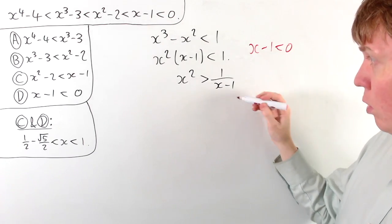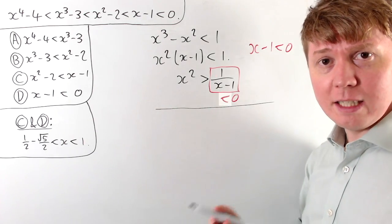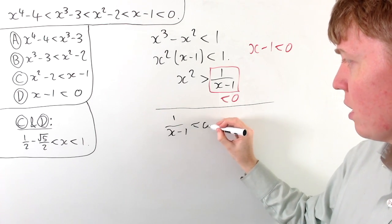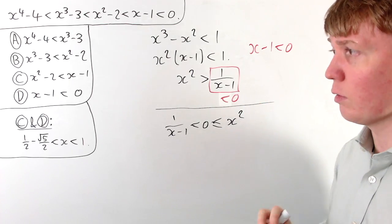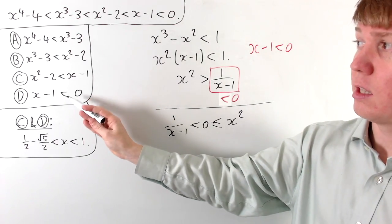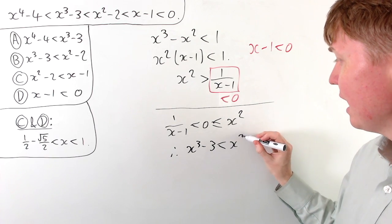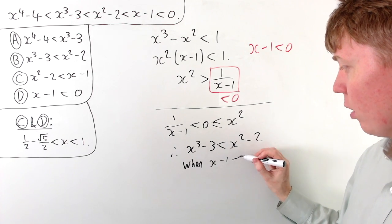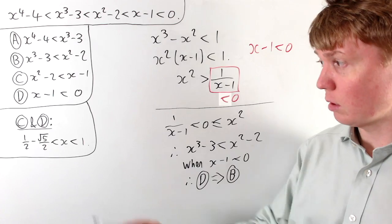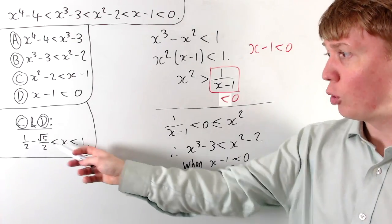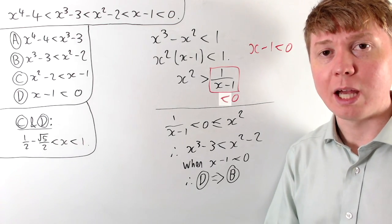Since x minus 1 is negative, 1 over (x minus 1) is also negative. And x squared, being any real number squared, is always greater than or equal to 0. So this inequality is always satisfied whenever x minus 1 is negative — meaning D implies B. Including B imposes no further restrictions; the solution set remains x between one half minus root 5 over 2 and 1.